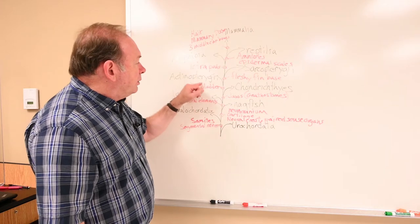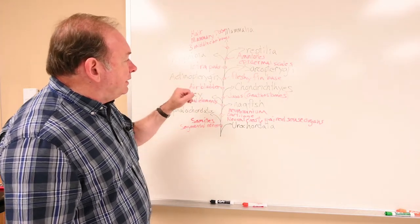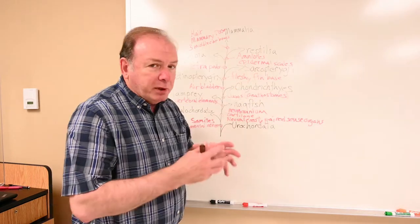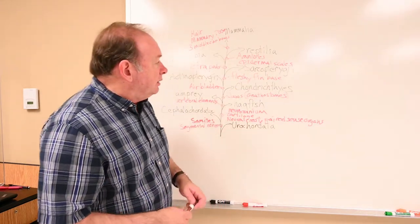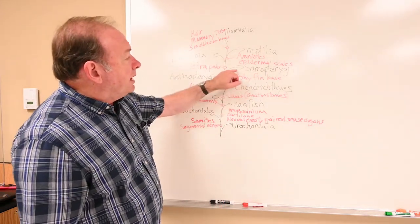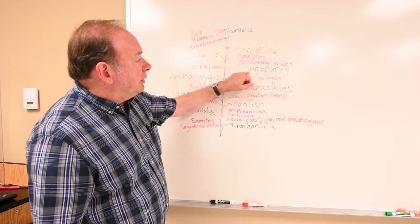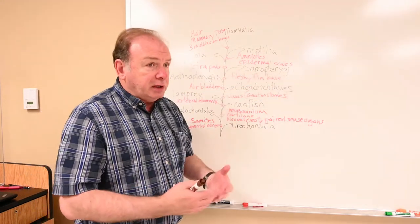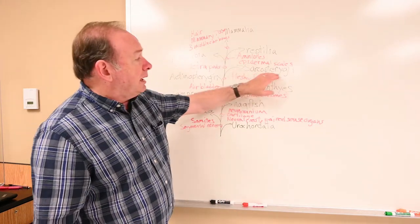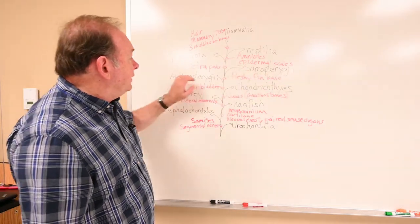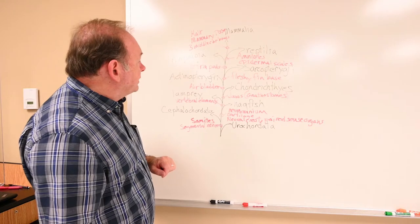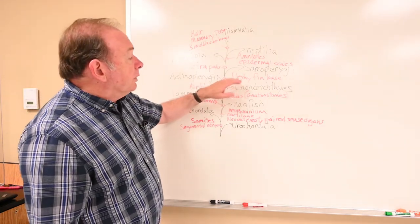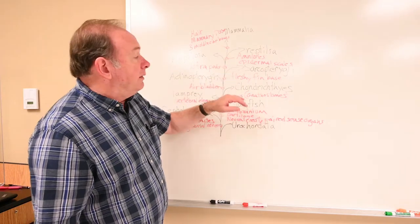Specifically the actinopterygian fishes are the first group to show the air bladder — those are the ray-finned fishes. Then we add the fleshy fin base, a muscular base with the fin supported by skeletal elements, seen in the sarcopterygian fishes — the coelacanth and lungfish categories. All the other bony fish are in the actinopterygian group. That finishes out all of our fish.